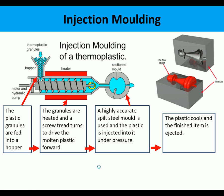Looking at the injection molding process: thermoplastic granules such as HIPS are fed into a hopper, heated, and an Archimedean screw turns to drive the molten plastic forward. A highly accurate split steel mold is used and the plastic is injected into it under pressure. The temperature of the mold is controlled, it cools, and the finished plastic item is then ejected out.